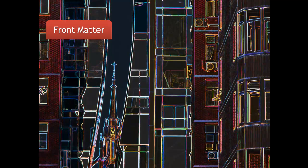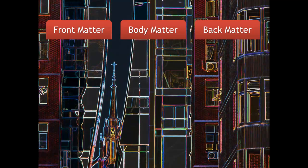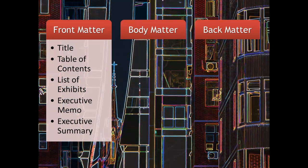So what are these three parts? We begin with our front matter, move on to the body matter, and then there's the back matter. In this example, our front matter is like a business policy strategy report. It'll have common elements like a table of contents, memos, etc.